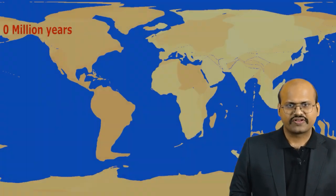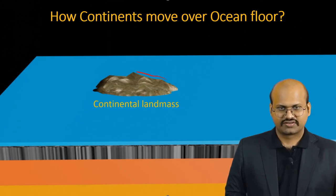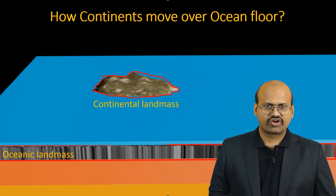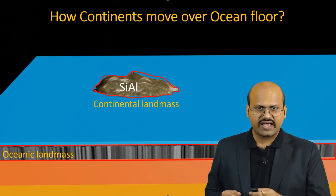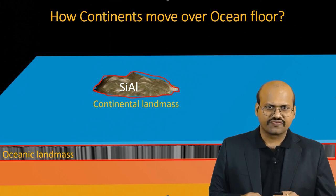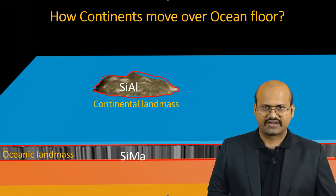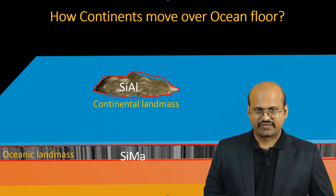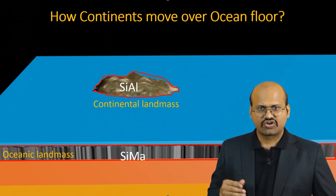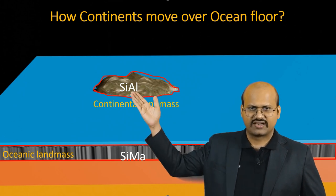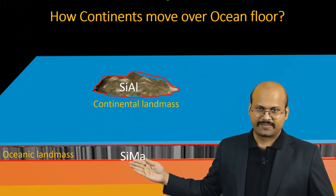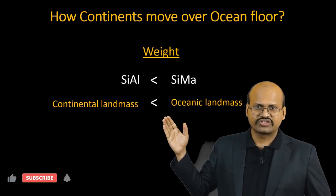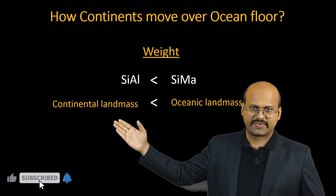Wegener also defined how continents move over oceans. It was well known that the continents are made of SIAL, which is silicon and aluminium, and ocean floors are made of SIMA, that is silicon and magnesium. Wegener said that since continents are made of SIAL and oceanic floors are made of SIMA, and since SIMA is heavier than SIAL, therefore oceanic floor is heavier than continental land mass.